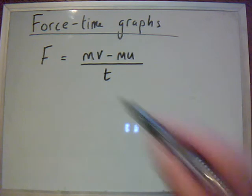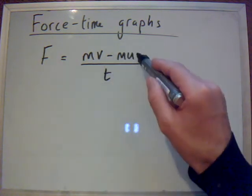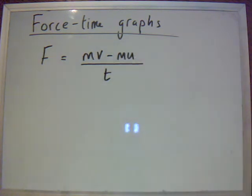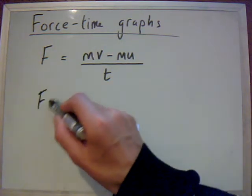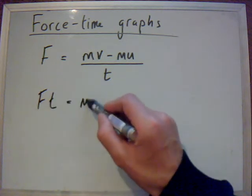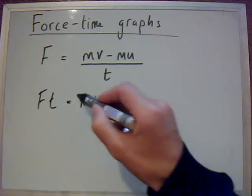where V is the final velocity and U is the initial velocity of the body whose momentum is changing, F being the force and T being the time. Now, if you multiply across by both sides we find that force times time equals MV minus MU.